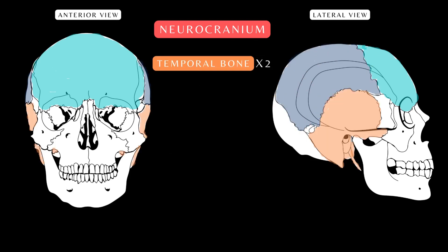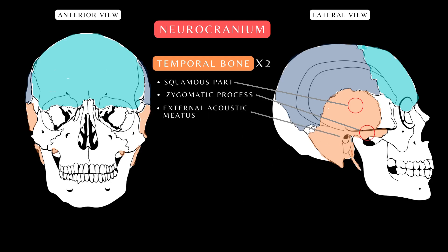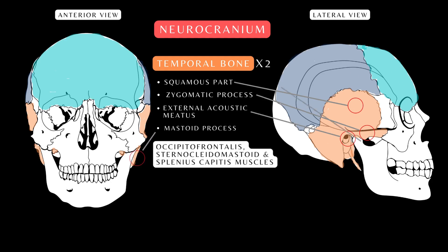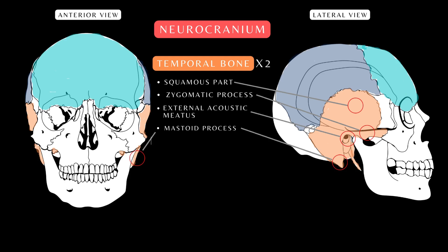Here is the temporal bone, a paired bone that lies inferiorly to the parietal bone. The temporal bone has a flat, compact squamous part which also helps to form the cranial cavity, and a zygomatic process — an arched bony projection from the lower aspect of the squamous part. Here is the external acoustic meatus, also called the auditory meatus or ear canal. Here's the mastoid process, a site for the attachment of the occipital frontalis and the sternocleidomastoid muscles of the neck. Finally, the styloid process is a bony projection and is the attachment site for the stylohyoid ligament and muscle.